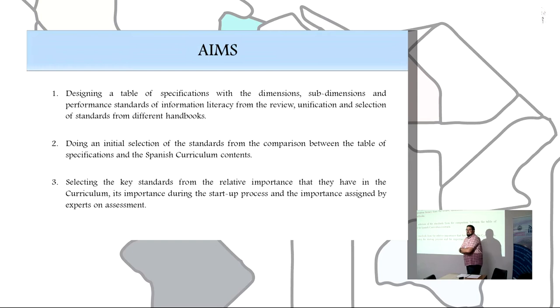The aims of this proposal are: designing a table of specification with the dimensions, sub-dimensions and performance standards of information literacy from the review, modification and selection of standards from different handbooks. Second, doing an initial selection of the standards for the comparison between the table of specification and the Spanish curriculum content. And finally, selecting the key standards from the relative importance that they have in the curriculum, its importance during the learning process and the importance assigned by experts.